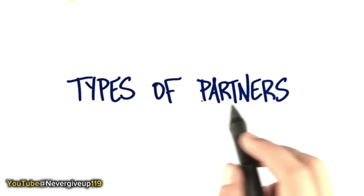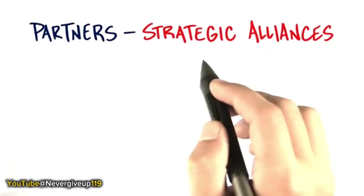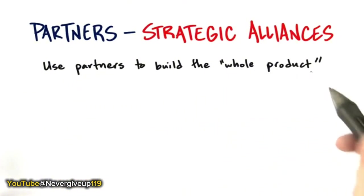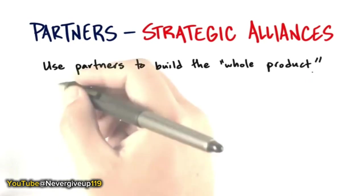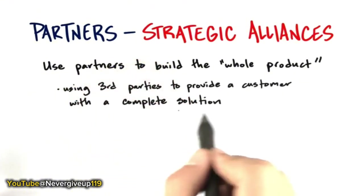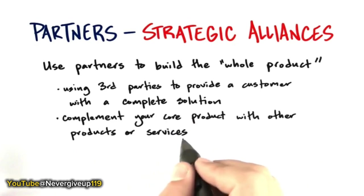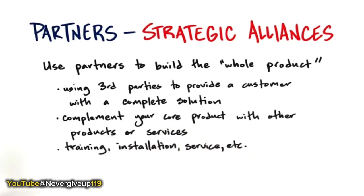Let's take a look at the types of partners. One of the most interesting concepts is strategic alliances. An important concept for a startup is the idea of the whole product. There is no possible way on day one that your startup could provide a mainstream customer with a complete solution — you don't have enough time, money, or resources to fill out every possible thing a Fortune 1000 company puts on a checklist or RFP. The idea is to use strategic alliances to complement your core product with other products or services.